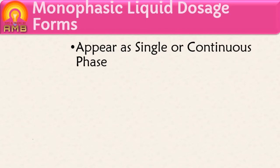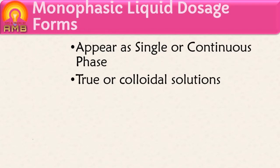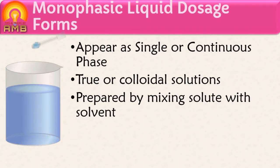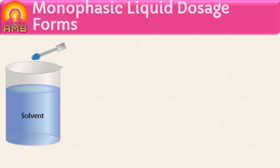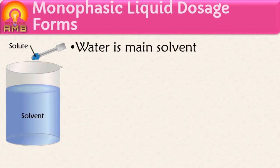The dosage forms which appear as a single phase or continuous phase are called as monophasic liquid dosage forms — for example, true solutions or colloidal solutions. These are prepared by mixing solute in the solvent. The component of solution which is present in large quantity is called as solvent, and the component which is present in smaller quantity is called as solute.